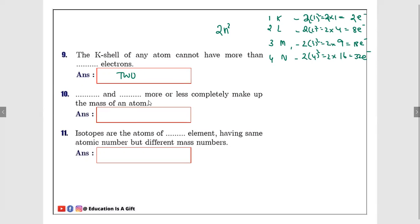Number ten: Dash and dash more or less completely make up the mass of atom. If you take an atom, it has a central part called the nucleus, and electrons will be revolving around the nucleus in specified orbits. If you see this nucleus, nucleus has protons and neutrons.